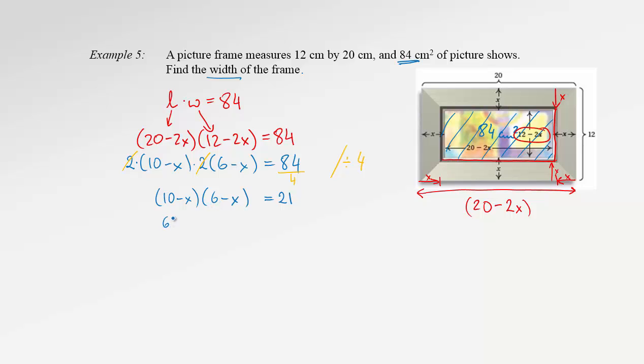So, 10 times 6 is 60. Then, 10 times negative x, negative 10x. And in a second, negative 6x. Finally, plus x squared. And bring the 21 over, so we have negative 21 equals 0.